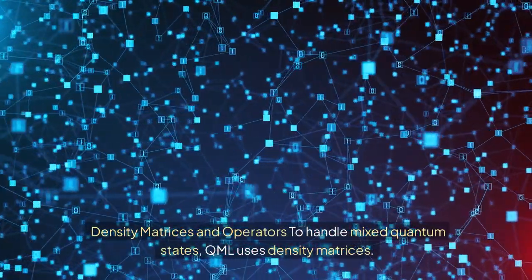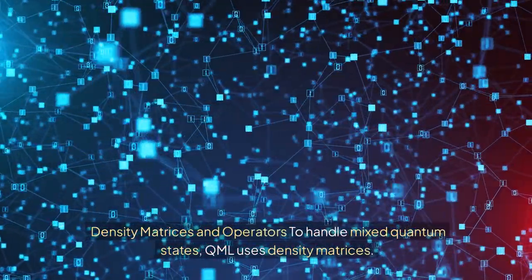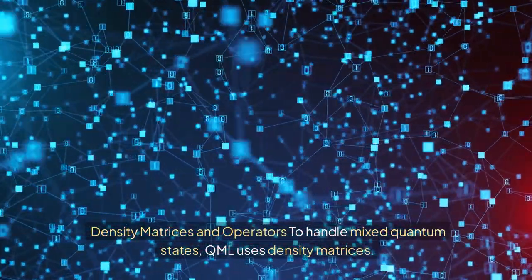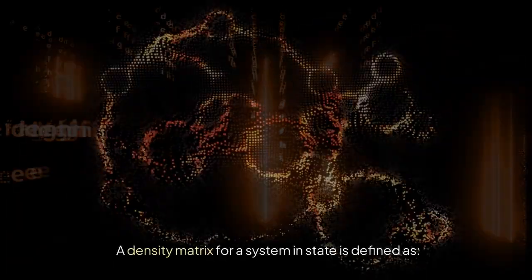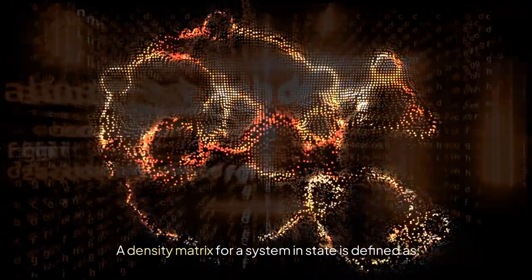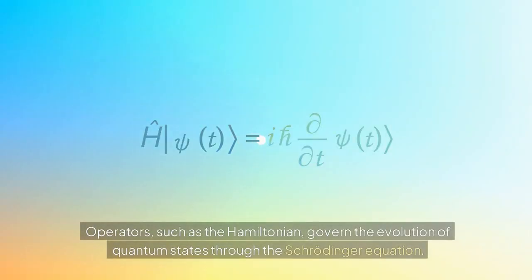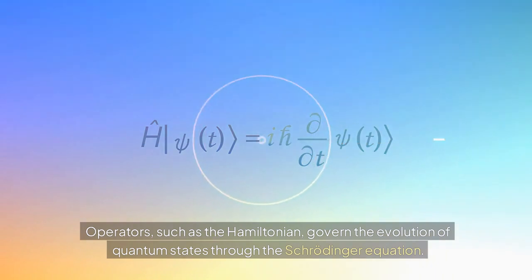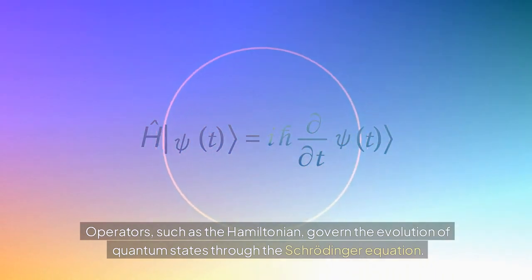To handle mixed quantum states, QML uses density matrices. A density matrix for a system in state |ψ⟩ is defined as ρ = |ψ⟩⟨ψ|. Operators such as the Hamiltonian govern the evolution of quantum states through the Schrödinger equation.